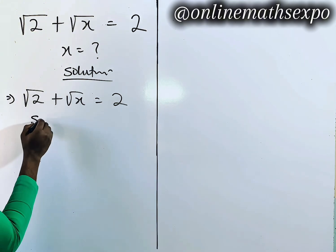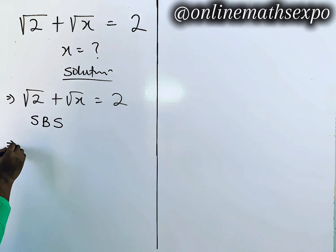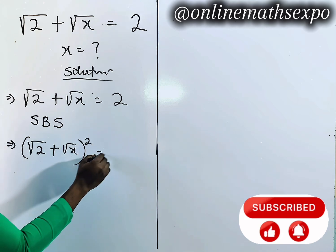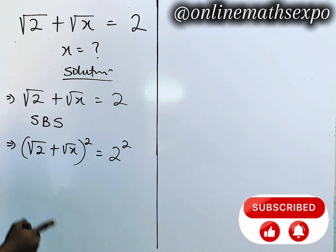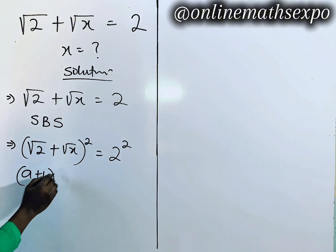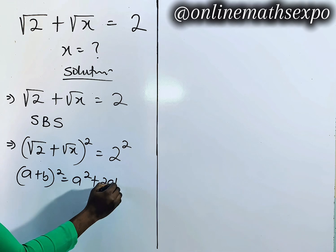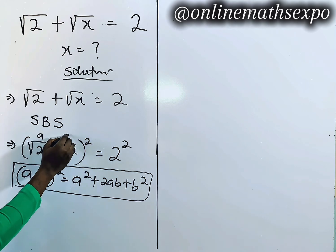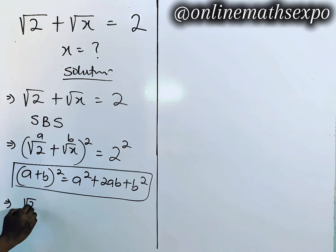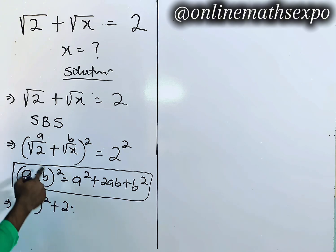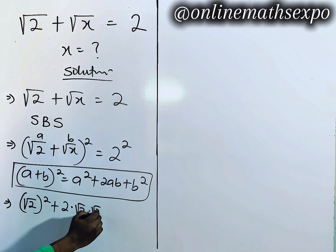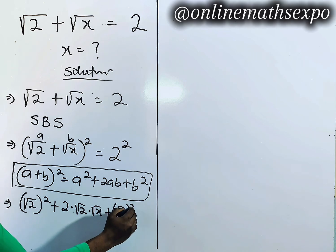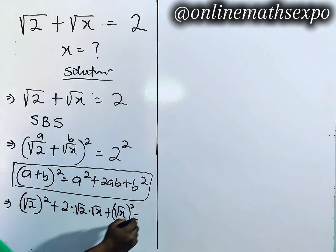What we do here is square both sides. So we have: root of (2 plus root x), all squared, is equal to 2 squared. Now remember, for every (a+b)² it's always a² + 2ab + b². Applying this rule, our a is root 2 and our b is root x, so we get root 2 squared, plus 2 times root 2 times root x, plus root x squared, which equals 2 squared, giving us 4.